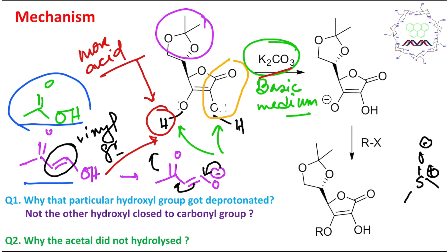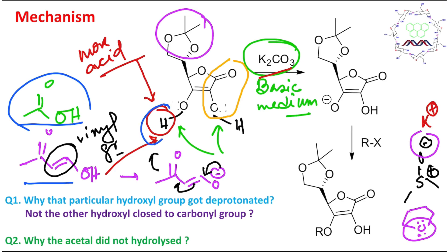DMSO is dimethyl sulfoxide, and THF also contains oxygen. These oxygens stabilize K⁺, so the basicity of carbonate enhances. Consequently, the vinylogous carboxylic acid proton is abstracted, and the vinylogous carboxylate anion is produced. This anion can then act as a nucleophile.